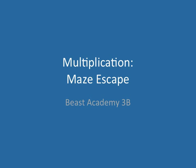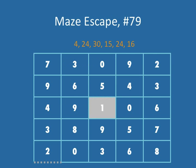And now for maze escapes, which you've seen before in Beast Academy. This time we are using multiplication to find our way out of the maze. In this first example, number 79, you are given products that you need to make as you make your way out of the maze.